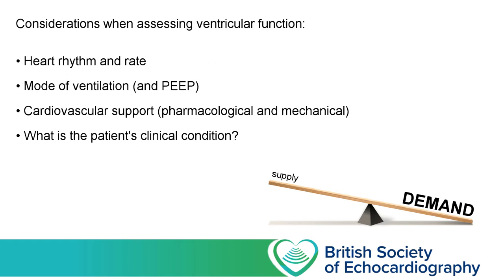Secondly, how is the patient being ventilated? Are they breathing spontaneously with negative pressure ventilation, or on some kind of invasive or non-invasive ventilatory support? If we're applying PEEP to the patient, as a general rule this tends to favour left ventricular systolic function — it decreases afterload on the left ventricle, but can sometimes have a negative impact on the right ventricle. Is the patient on any cardiovascular support or inotrope infusion? If a patient's on a positively inotropic agent, what might look like normal function probably represents quite an impaired ventricle. Is there any mechanical circulatory support? If so, this will have a huge impact on preload, afterload, and contractility — you probably need to ask whether you're the best person to assess the ventricle in that context.